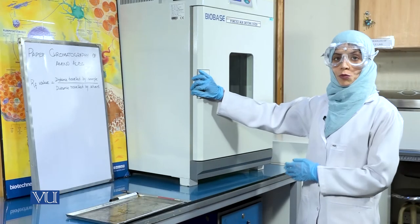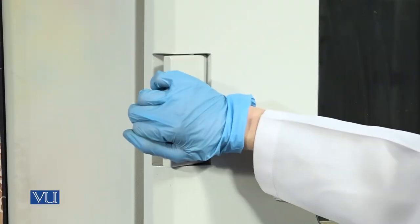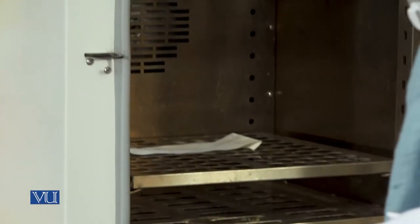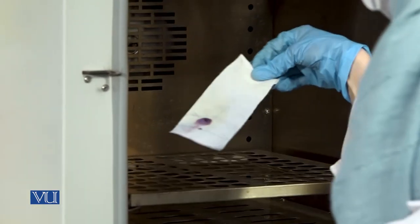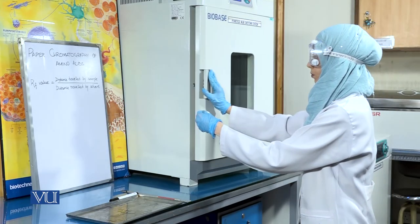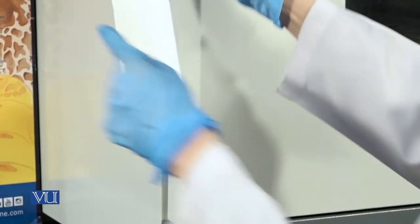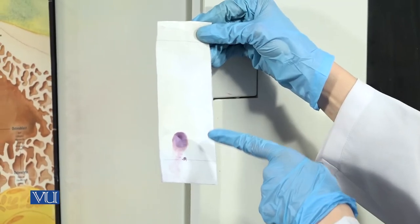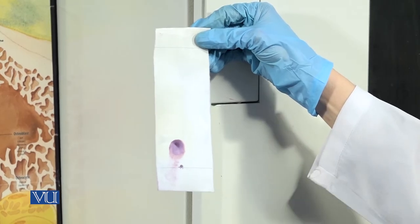After 5 minutes, we will remove this chromatogram from the oven. You will be able to clearly see the spot of the amino acid on the chromatogram.